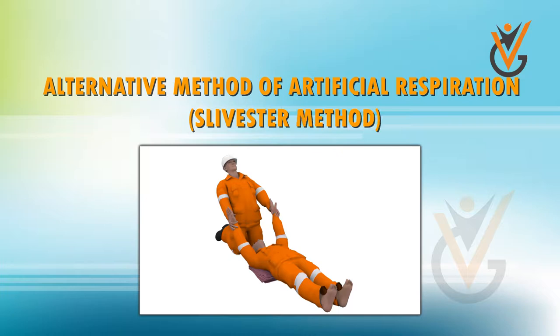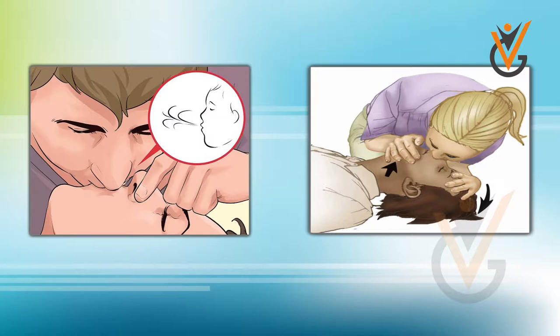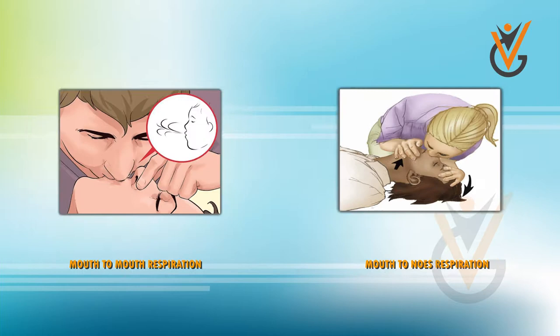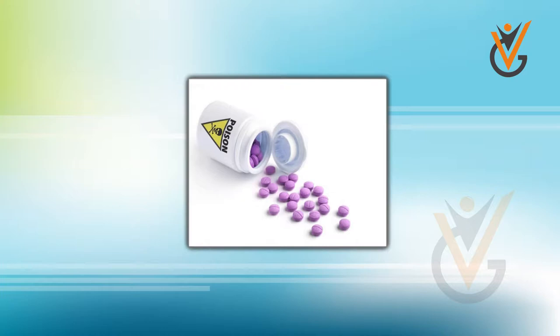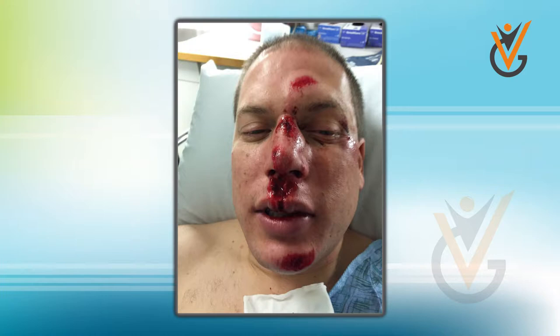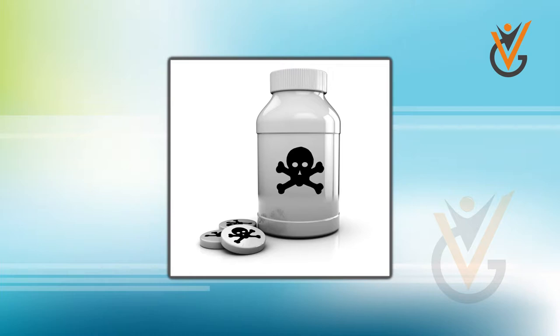Alternative method of artificial respiration: the Sylvester method. In some instances, mouth-to-mouth respiration and mouth-to-nose respiration cannot be used. For instance, certain toxic and caustic materials constitute a hazard for the rescuer, or facial injuries may prohibit the use of these techniques. It is particularly recommended for patients who have swallowed poison.